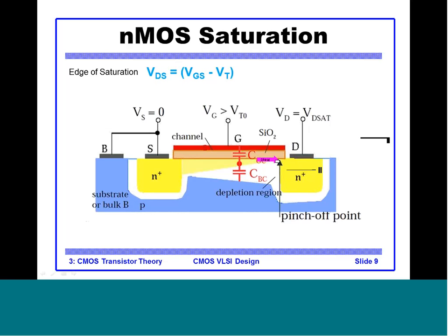The condition to remember is that VGS should be greater than VT. So VGS − VT is a positive value, and VDS = VGS − VT, also called VDSat. This is the voltage at which the NMOS starts going into saturation. VGS and VS are assumed to be 0 for now.